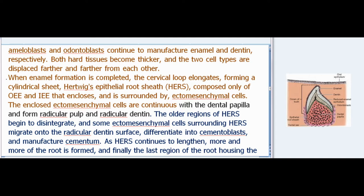Both hard tissues become thicker and the two cell types are displaced farther from each other. When enamel formation is completed, the cervical loop elongates forming Hertwig's epithelial root sheath (HERS), a cylindrical sheet composed only of OEE and IEE that encloses and is surrounded by ectomesenchymal cells. The enclosed ectomesenchymal cells are continuous with the dental papilla and form radicular pulp and radicular dentin. Older regions of HERS begin to disintegrate, and some surrounding ectomesenchymal cells migrate onto the radicular dentin surface, differentiate into cementoblasts, and manufacture cementum.